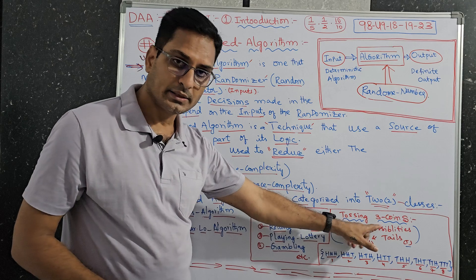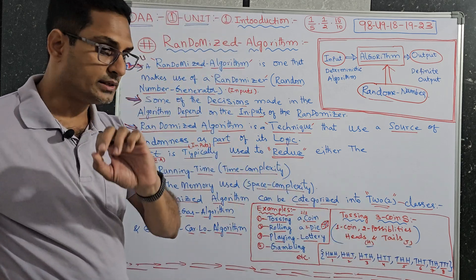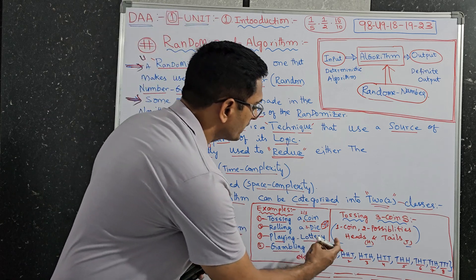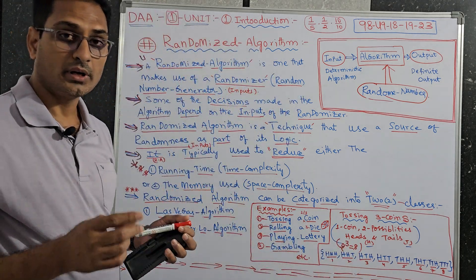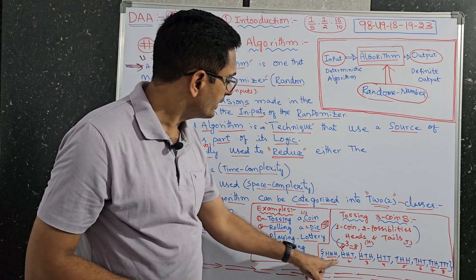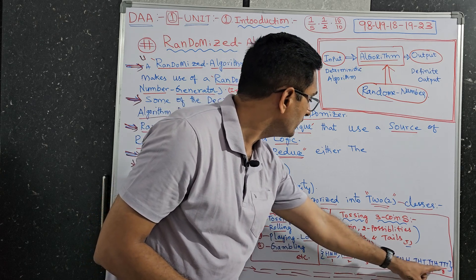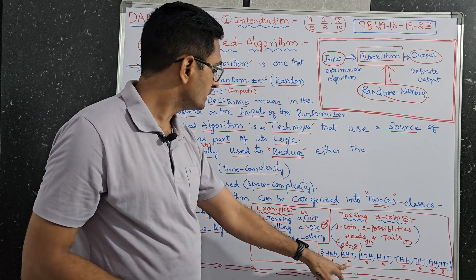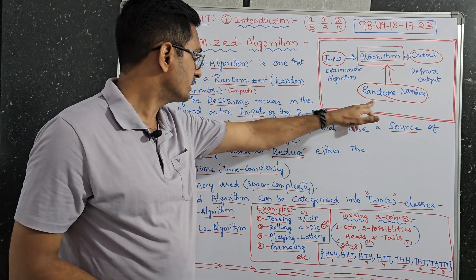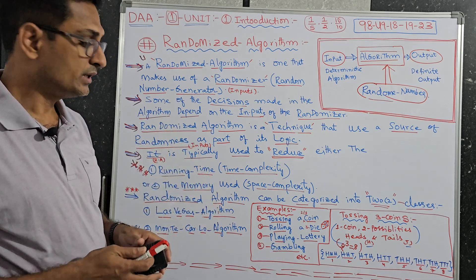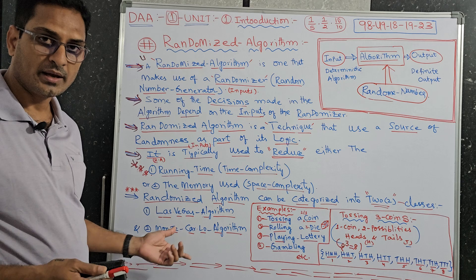These are examples from the textbook. Tossing three coins at a time, one coin means two possibilities, either head or tail. We are tossing three coins, probabilities are two power three. I will follow this video with Las Vegas algorithm, then next video the difference between Las Vegas algorithm and the Monte Carlo algorithm. All the best for your exam.